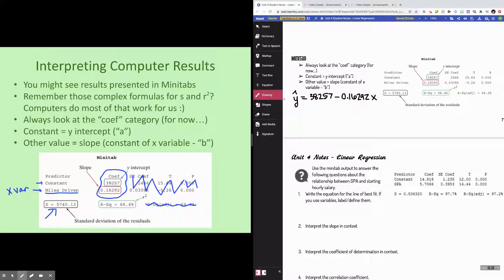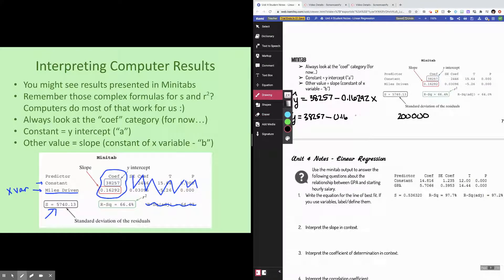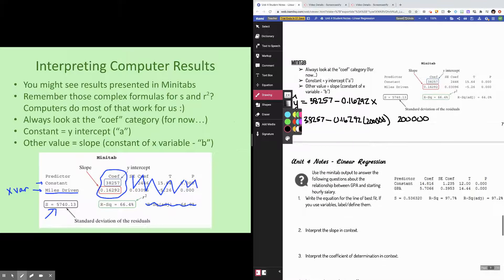You can take the information directly from the mini-tab and write your least squares regression line. y-hat equals 38,257, and then that miles driven, it should have a negative sign in front of it. That's just a typo on this particular mini-tab. It should have a negative sign on it because it's an actual negative number. The slope is negative. So normally it will have a negative number there. If it doesn't, make sure that you check the scatter plot to be sure that you're putting the right sign in front of the slope. So minus 0.16292x. So this is a very common question that gets asked. They'll give you a mini-tab output and ask you to write the equation of the least squares regression line from the mini-tab output, which is exactly what I did right here.